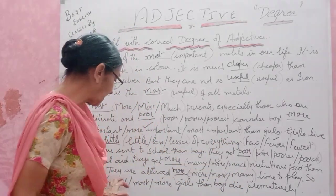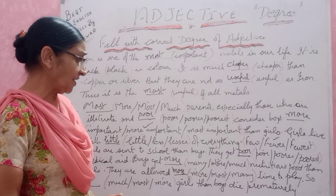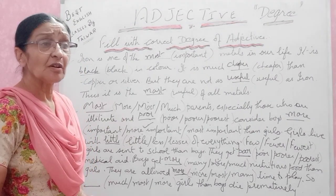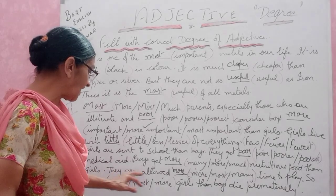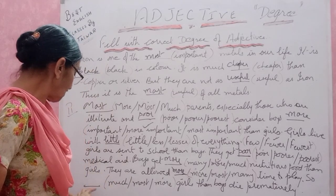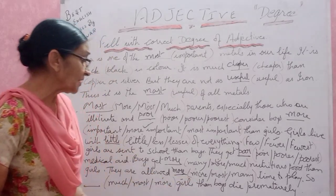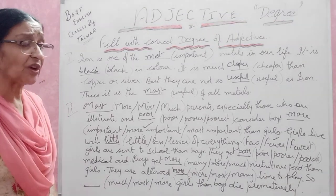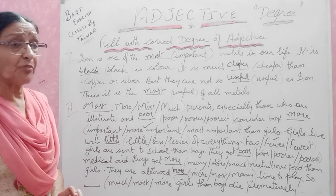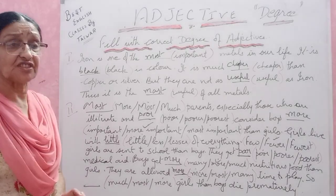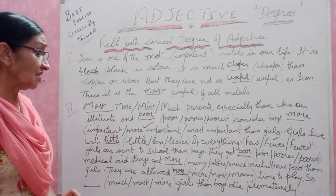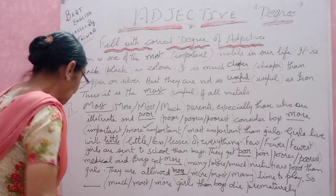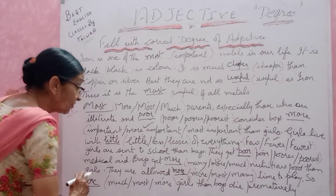Boys are allowed more time to play than girls. So we put 'more' because 'than' is there. More girls than boys die prematurely. That is why — when a girl is born, some say to abolish them, but for boys they say yes. So mostly girls die in greater numbers, more girls than boys die prematurely.